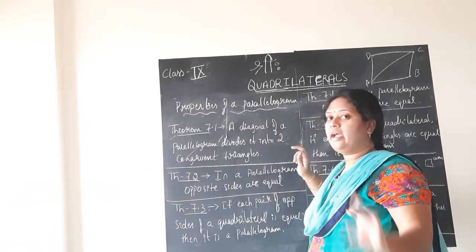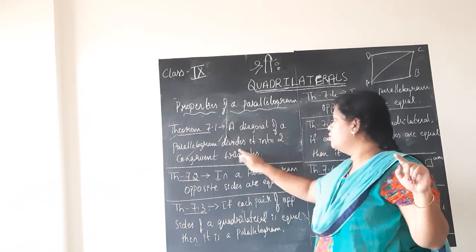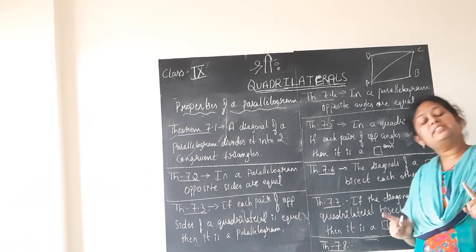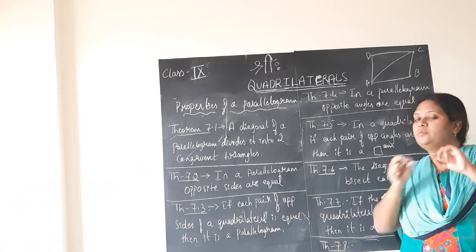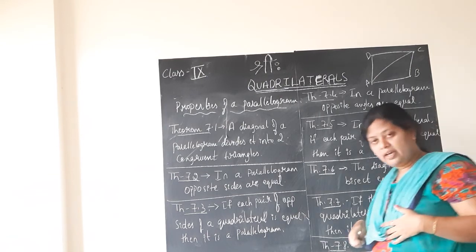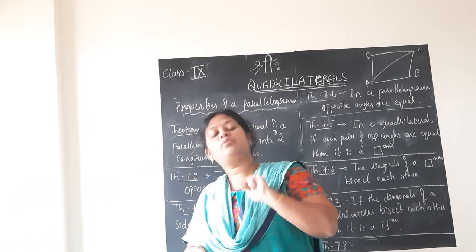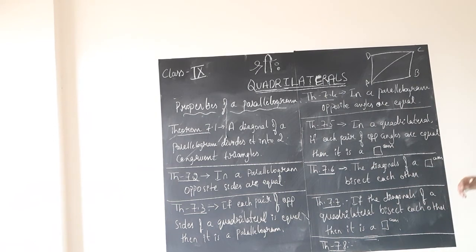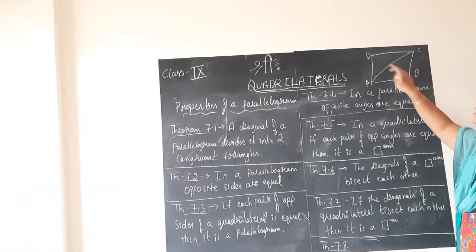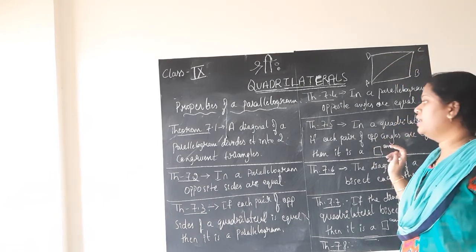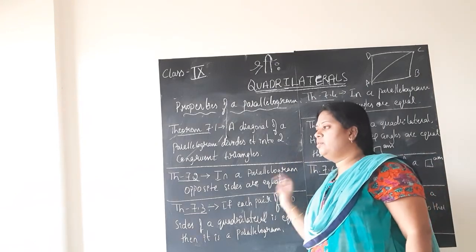A single diagonal of a parallelogram divides it into two congruent triangles. Please underline that. A diagonal drawn to a parallelogram will divide it into two congruent triangles. You already know what congruent triangles are. So the parallelogram is divided into two congruent triangles by drawing a diagonal. That is the statement of Theorem 7.1.